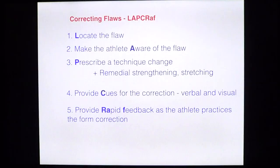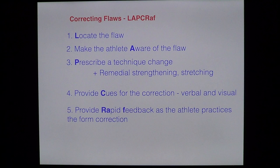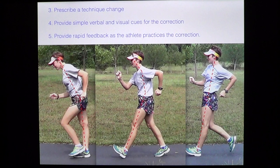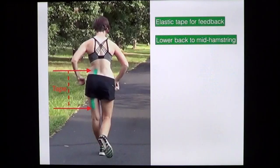We've located our flaw, now we're going to make them aware of it and prescribe a change. We might make them aware by taking a photograph with our phone, maybe adding some lines to explain the body position error. We prescribe a technique change — we tell them to get their body straight and generally slightly forward. We then give them cues such as 'stay upright' and give them feedback as they practice the correction.